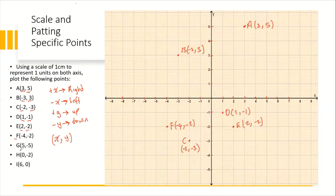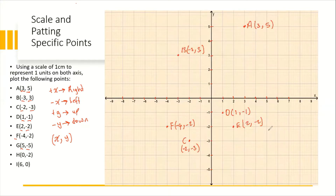For Point G, we have a positive x component and a negative y component, suggesting we are going to go five units to the right and five units down. From the origin, we go one, two, three, four, five to the right, then five down: one, two, three, four, five — which takes us to this point. This is Point G, with coordinate (5, -5).